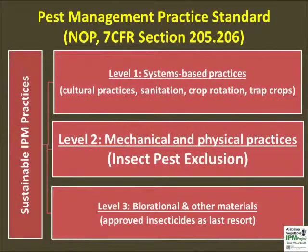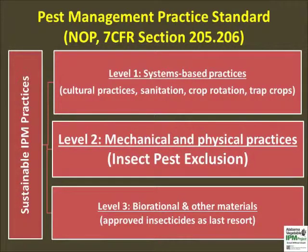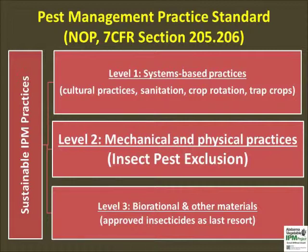There are three recommended IPM approaches for sustainable systems, and they are especially applicable in small plot agriculture and urban farms. Level 1 systems-based practices like growing pest tolerant varieties and trap cropping, and Level 3 use of biorational insecticides have been discussed separately in other training modules on the Alabama Vegetable IPM website. This video discusses insect pest exclusion methods suitable for community gardens and urban farms that use small plot intensive agricultural practices.